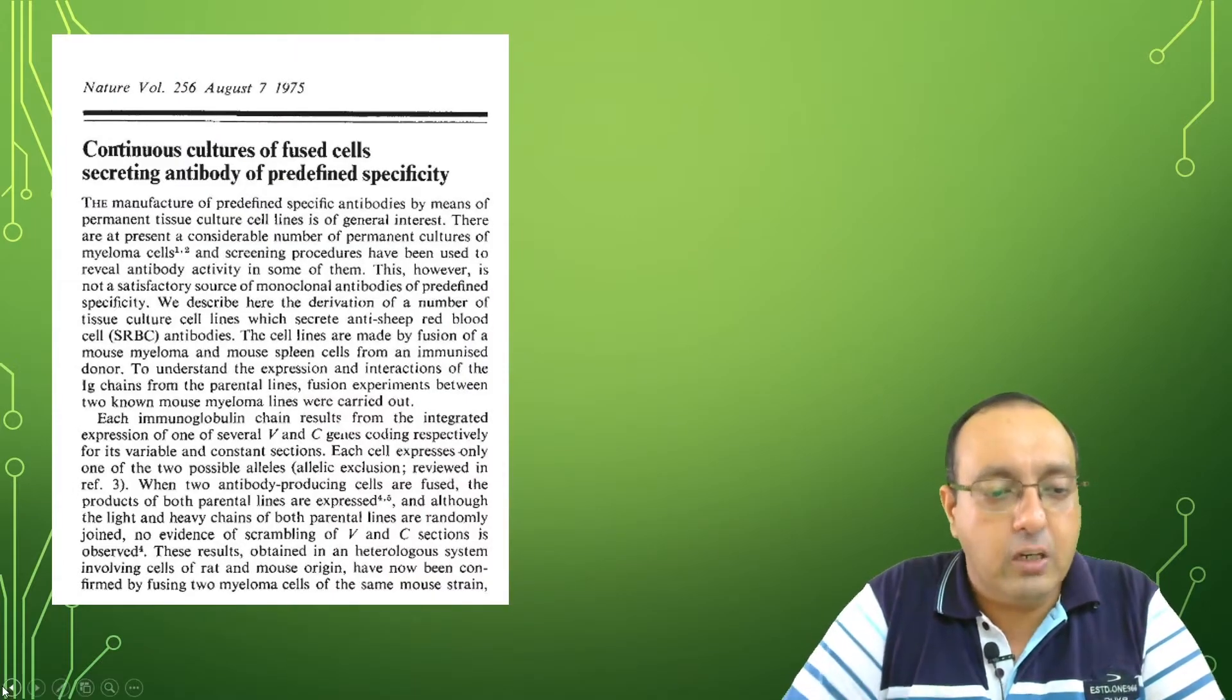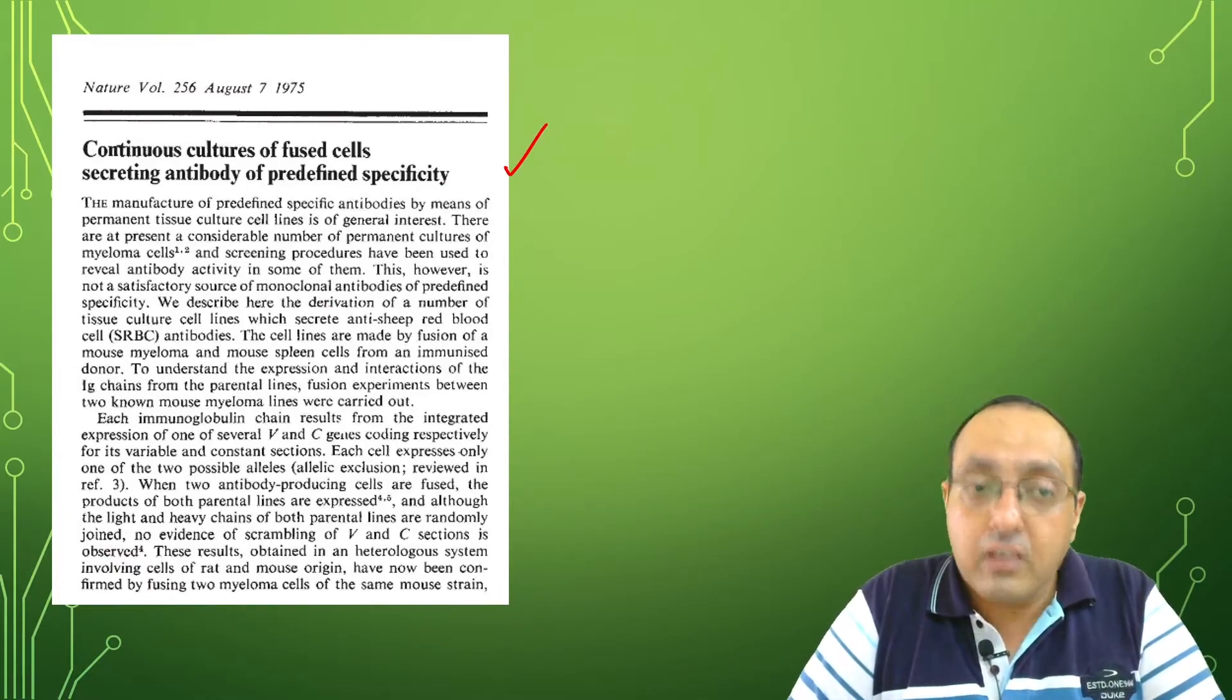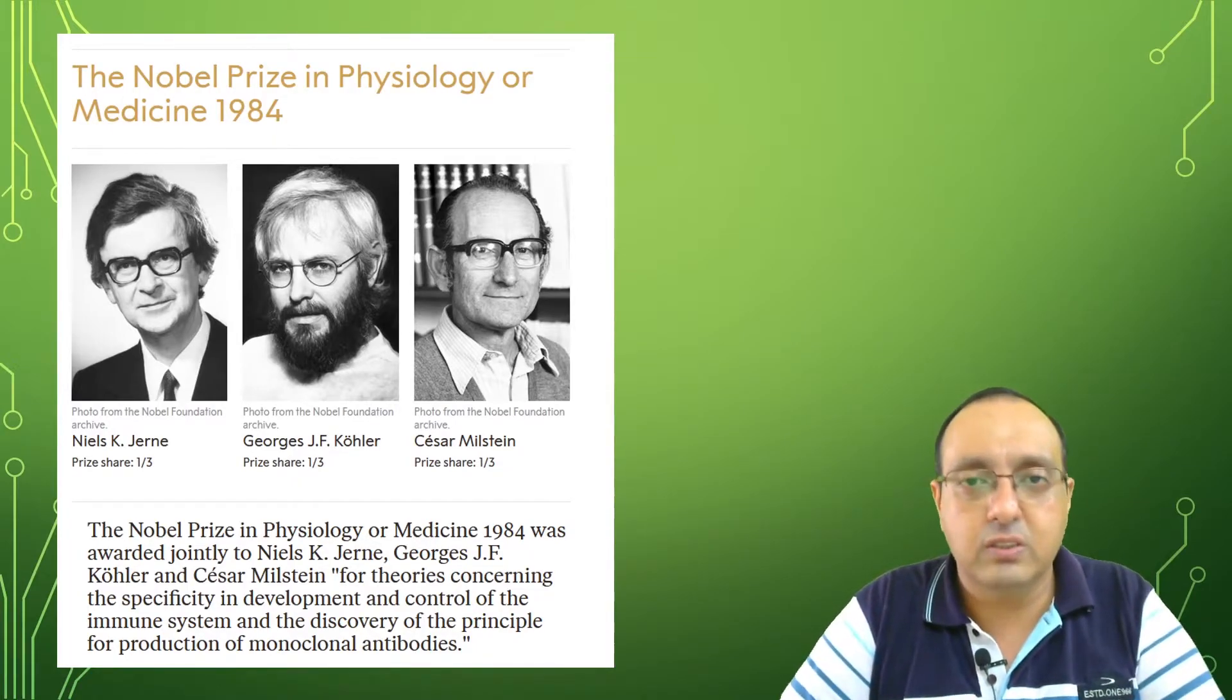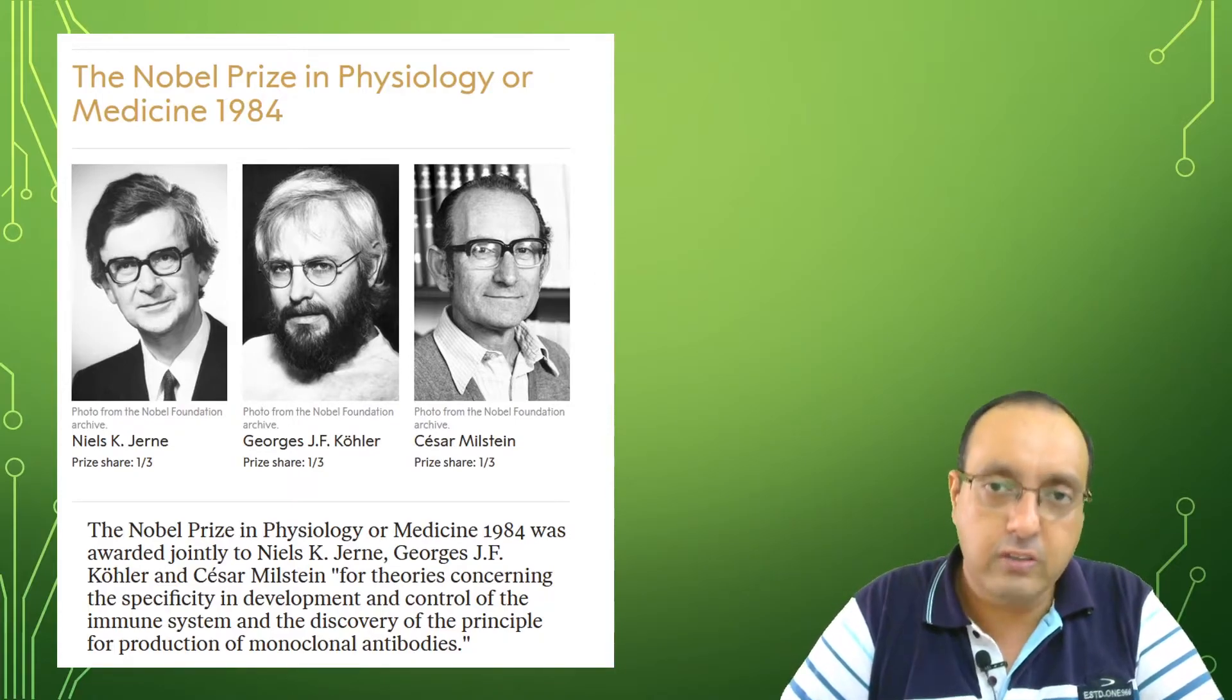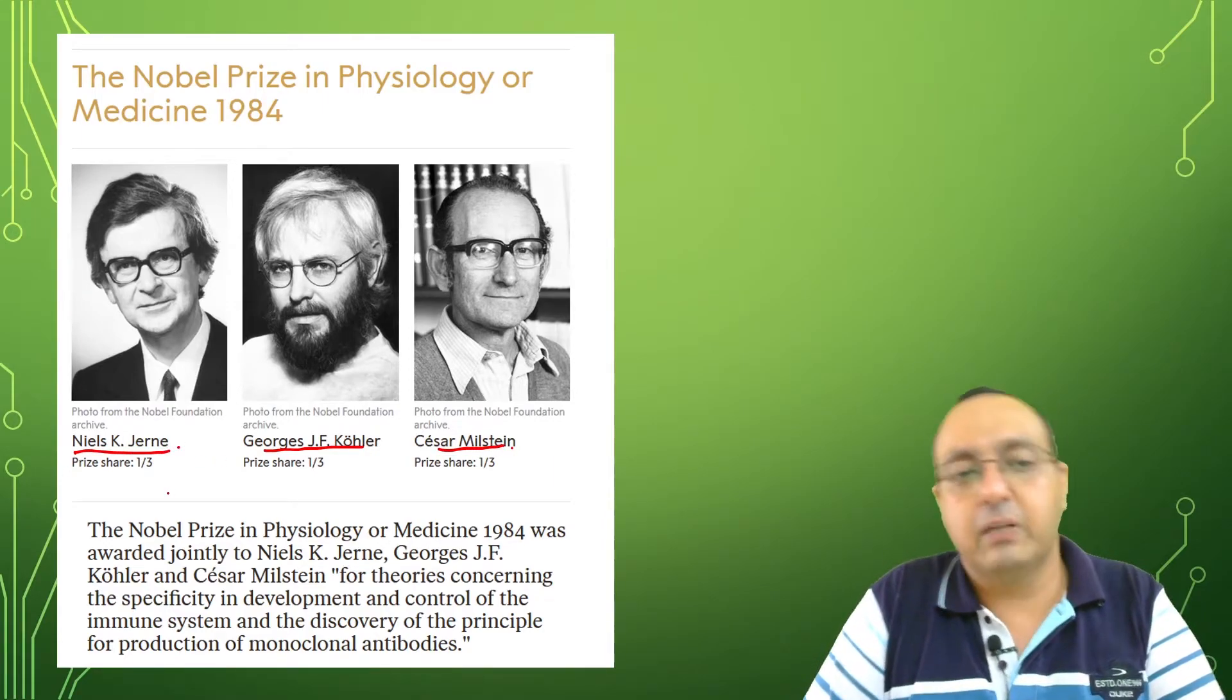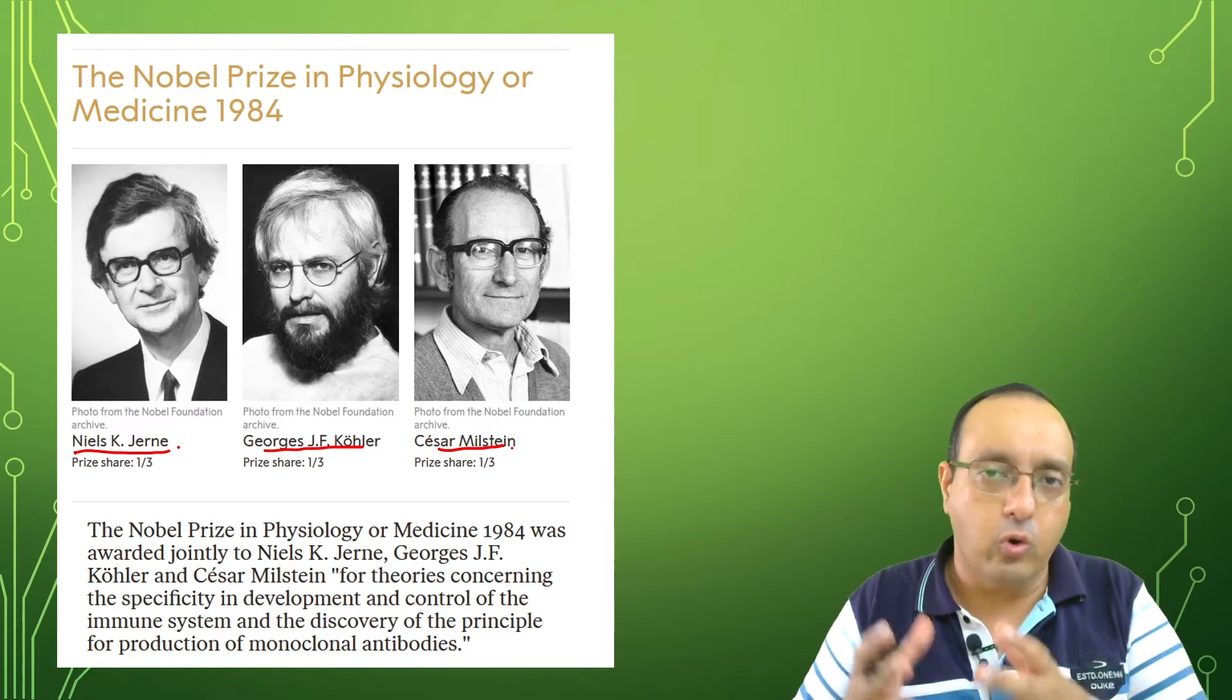Here we have the original paper produced by Georges Köhler and César Milstein which reported the first production of monoclonal antibodies. This was published in Nature. They were awarded the Nobel Prize in Physiology or Medicine in 1984. Niels Jerne also shared the Nobel Prize but for his studies on theories related to immunology, not the actual development of monoclonal antibodies.